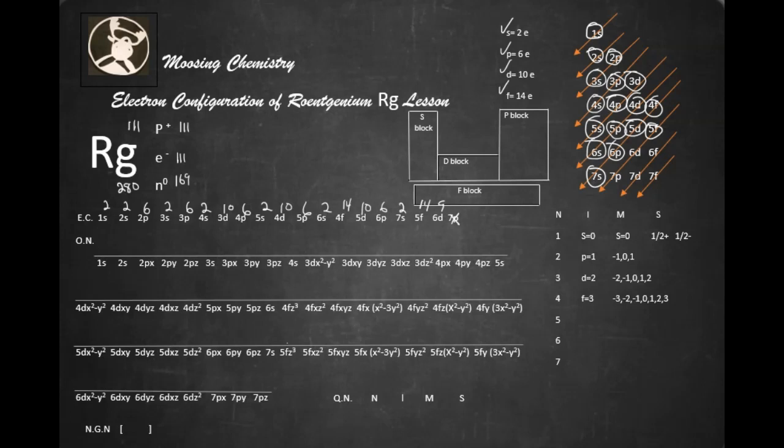Alright, so now Hund's rule states that we put an up arrow in every sub-orbital before we put the down arrow. Up and down. Up and down. Up, up, up. Down, down, and down. Up and down. See that? Up and down. And we're just doing it as happy as we can be as a clam, not a problem.